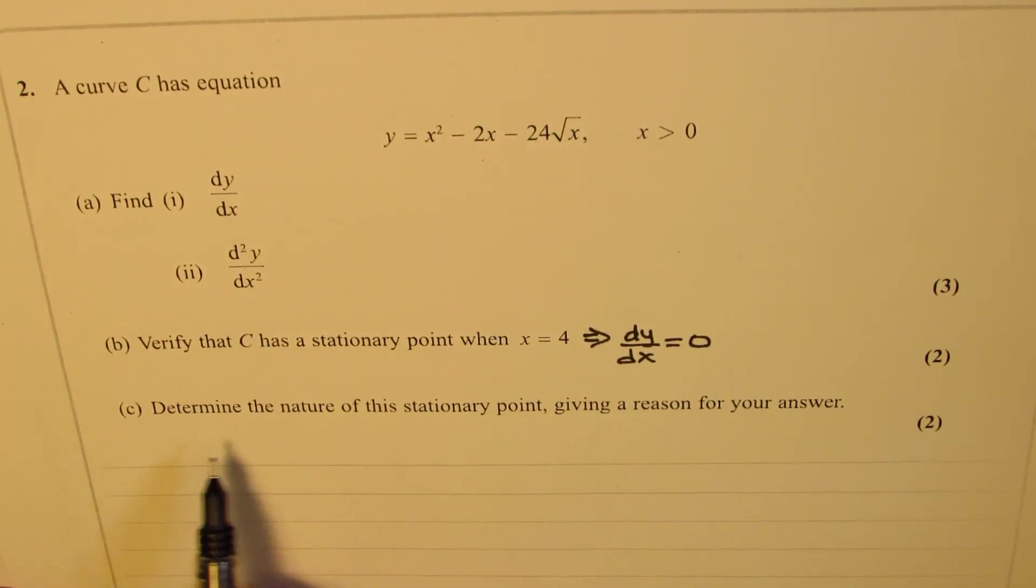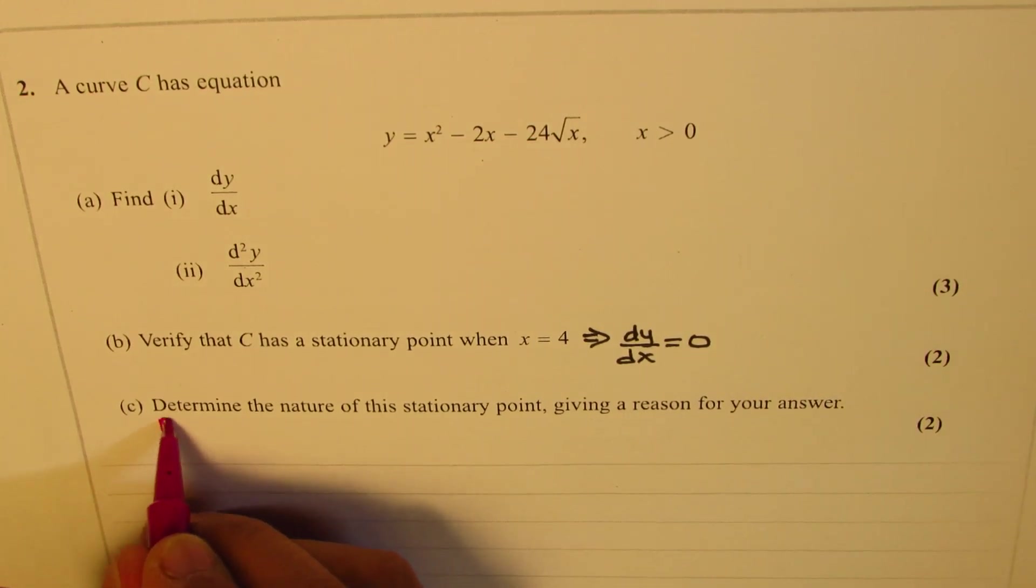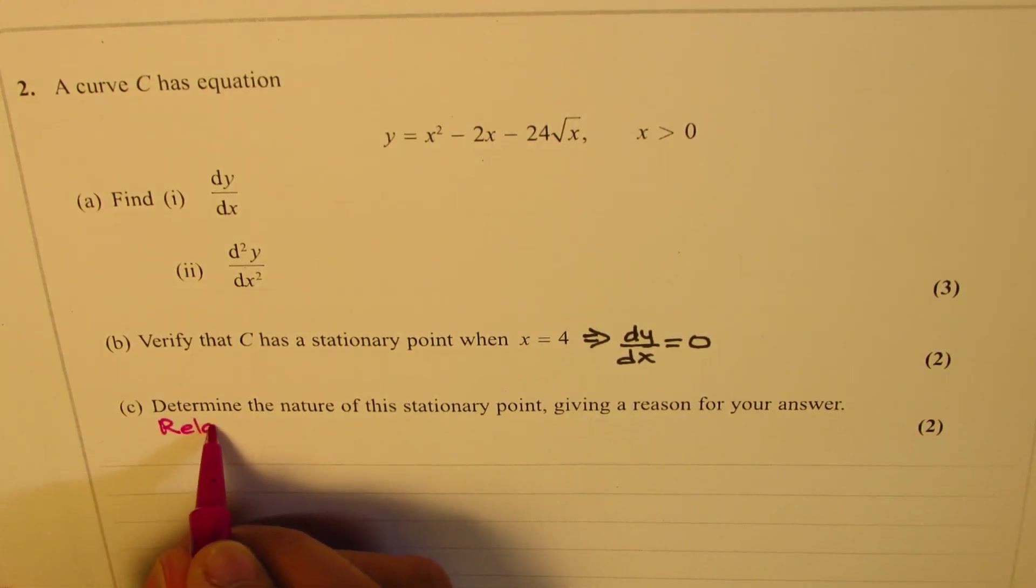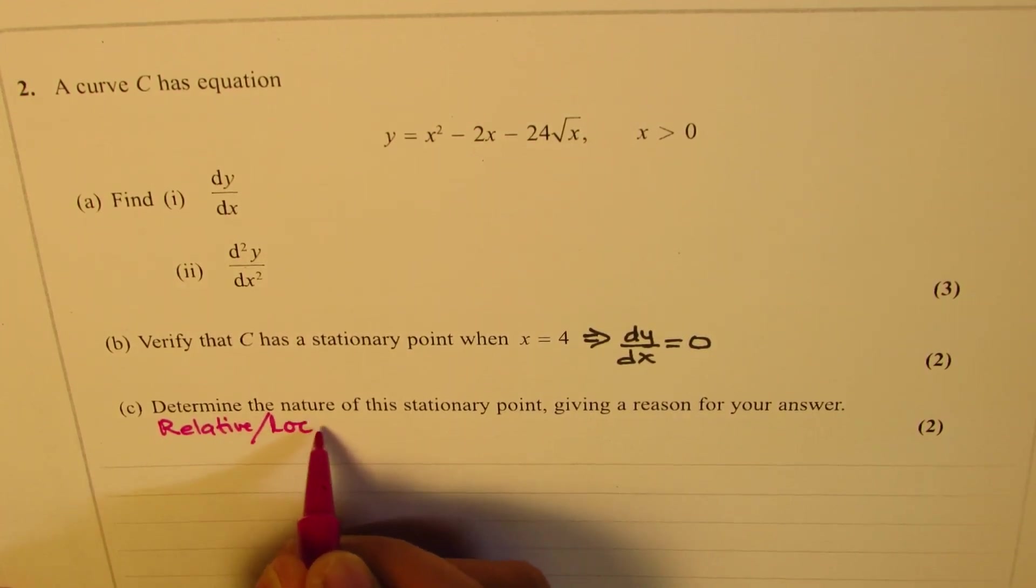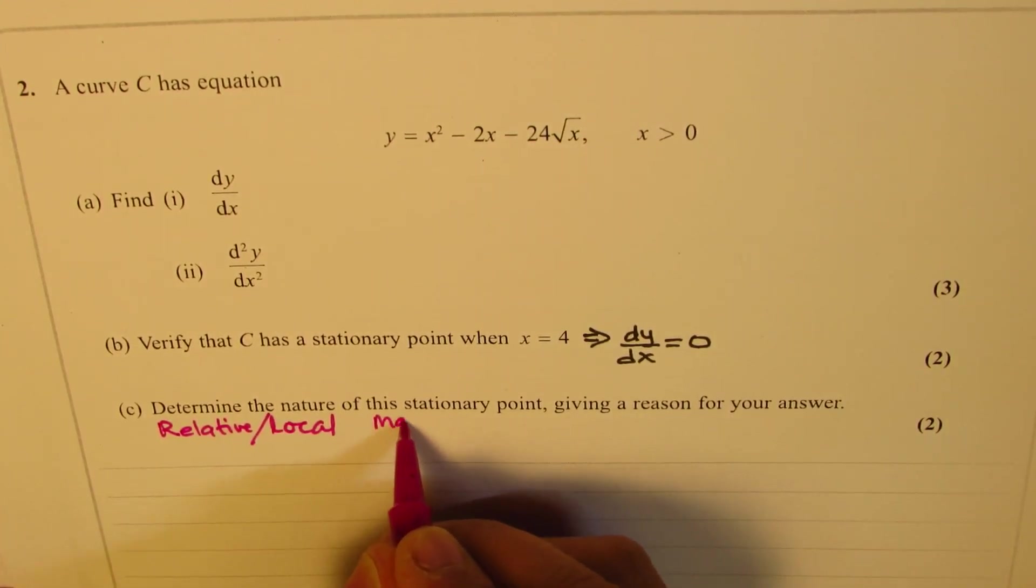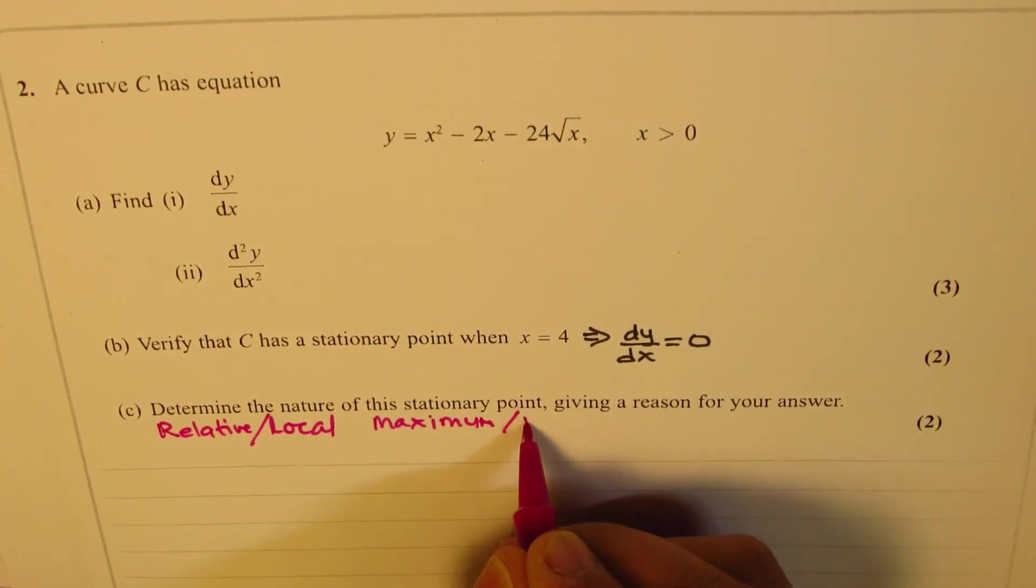Now part C is determine the nature of this stationary point, giving a reason for your answer. So we can find relative maximum or minimum, that basically means relative, you can say local, maximum or minimum. That is what it means.